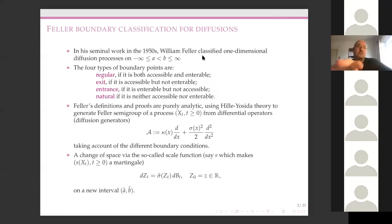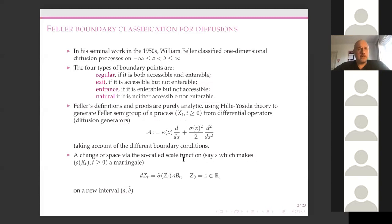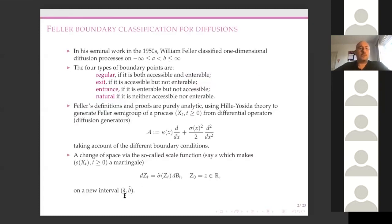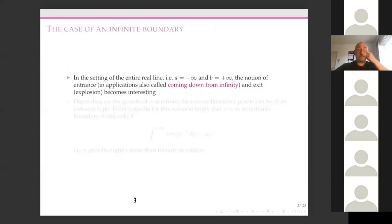Feller's analysis was largely based around the generator of the one-dimensional diffusion using Hille-Yosida theory. His first trick was to get rid of the drift term using a scale function — changing scale, if you like. There's a natural harmonic function associated with this operator, and you load up the diffusion into that harmonic function to get a local martingale. Under that transformation, the boundaries transform to another A and another B, so it suffices to look at a simpler SDE.